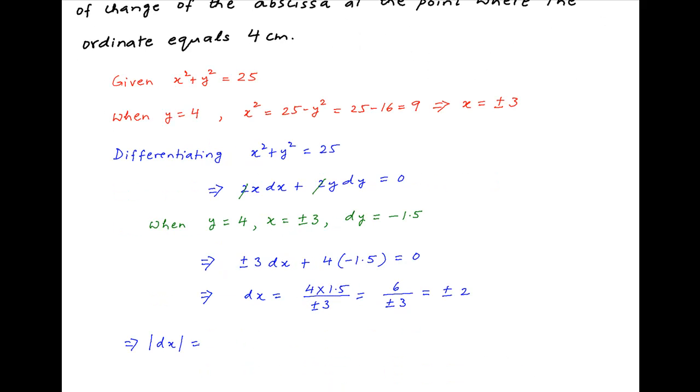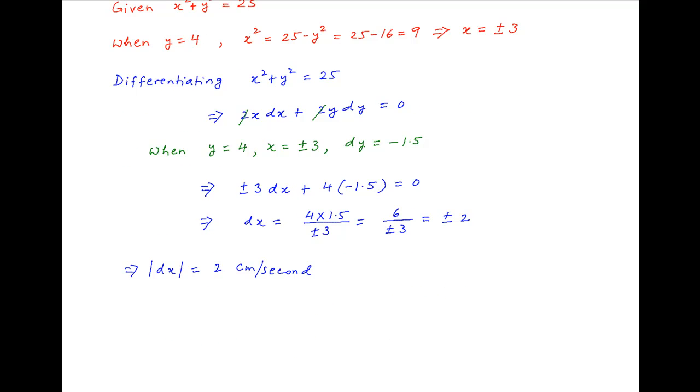Therefore, the rate of change of the abscissa, dx, equals plus or minus 2 centimeters per second, and the absolute value of the change is 2 centimeters per second.